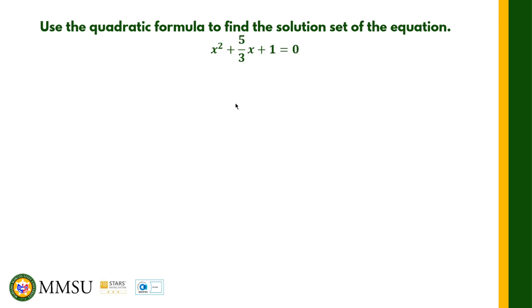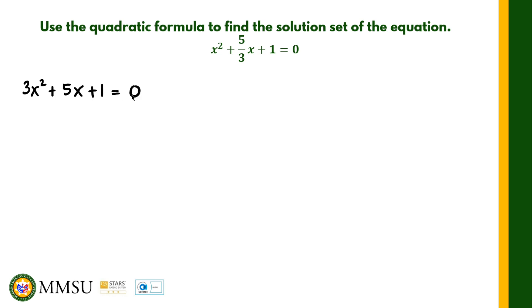We will answer one more problem. Use the quadratic formula to find the solution set of x squared plus 5/3 x plus 1 equals 0. This is not yet in standard form because of the fraction 5/3. We can rewrite this by multiplying 3 through the equation, which gives us 3x squared plus 5x plus 3 equals 0.